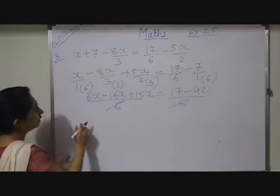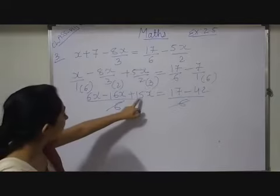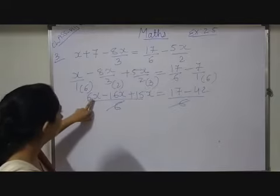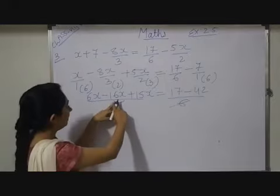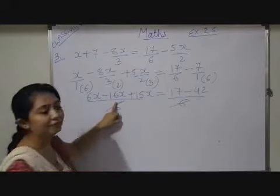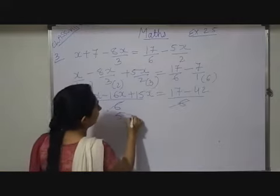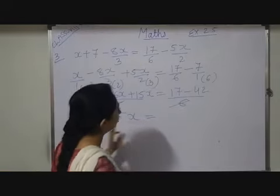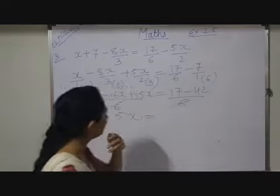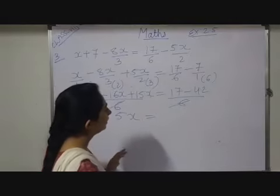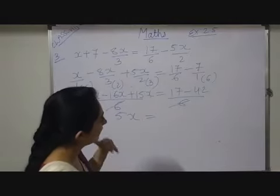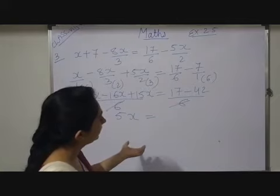Now observe this 6x will be cancelled out. So 15x plus 6x sorry minus 16x plus 15x minus x and 6x minus x will be 5x which is equals to. Now 42 minus 17 subtract it. 32 again I will subtract 7. Then I will get...